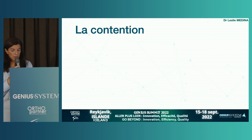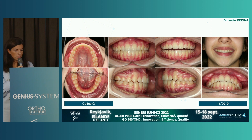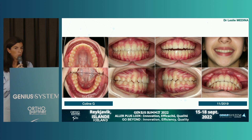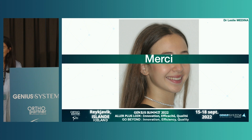Finally, the retainer phase. For Colline, we use bonded white retainer wires on both the maxillary and mandibular arches. The day we remove the brackets, we bond the retainer wire — we'd already taken an impression, so everything was ready. Thank you very much for your attention, and if you have any questions, please don't hesitate.